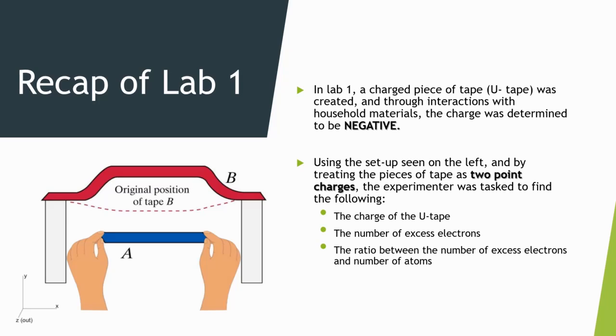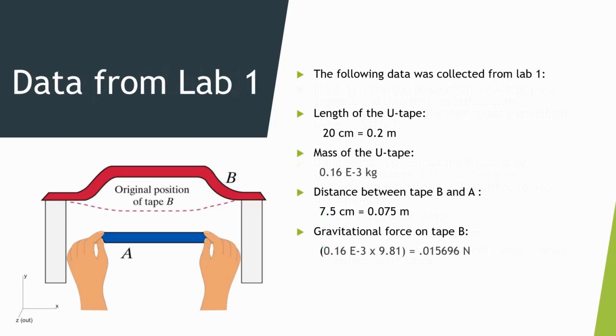From lab 1, the following data was collected and was used again to complete the tasks lab 2 required. The length of the U-tape was 20 centimeters, the mass of the U-tape was 1.6 grams, the measured distance between tapes A and B was 7.5 centimeters, and the force acting on tape A was 0.15696 newtons.